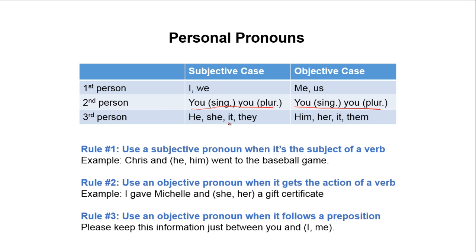Now I'm going to teach you three rules — one for when you'll need to use subjective pronouns and two for when you'll need to use objective pronouns. Rule number one: use a subjective pronoun when it's the subject of a verb. Example: 'Chris and he or him went to the baseball game.' Find the verb: went. Who went to the game? Chris and one of these pronouns. Because this is the subject of the verb went, we need a subjective pronoun — we use 'he.' 'Chris and he went to the baseball game.' It sounds awkward, but it's grammatically correct.